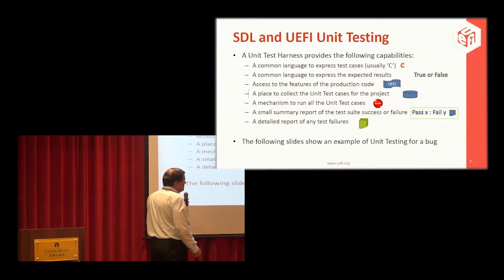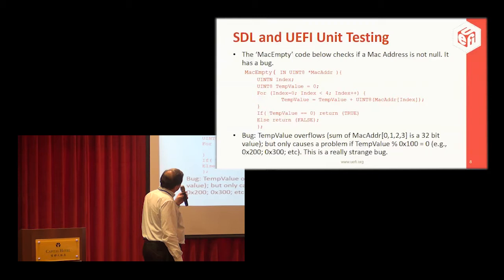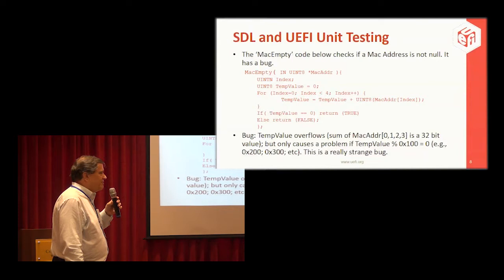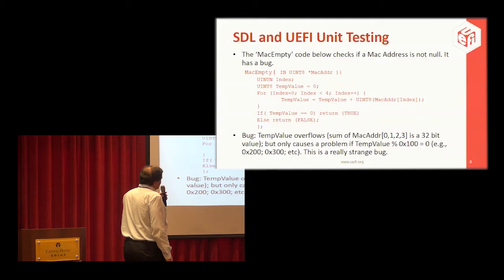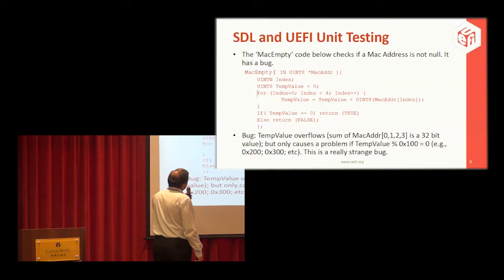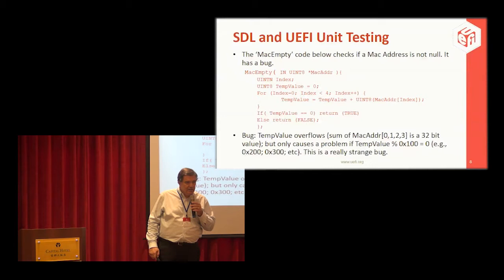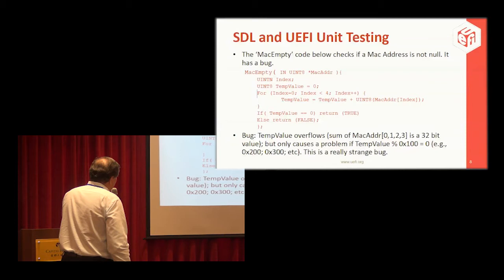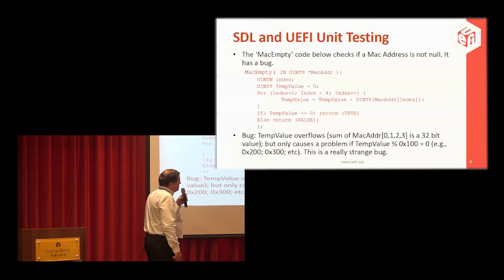The following slides show an example of unit testing for a bug. There's a routine in the code called MACMT with a simple job: looking at a four-byte array to see if it's zero. The programmer made a mistake. We have a problem with integer overflow — it's an 8-bit integer in this array, and someone is adding up all the elements 8 bits at a time and storing the result in an 8-bit variable, which doesn't work. It overflows — you need a 32-bit place to store the result.